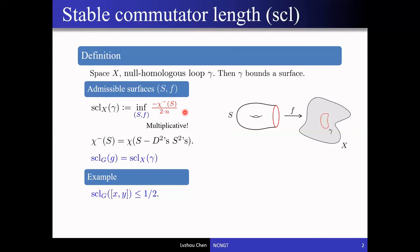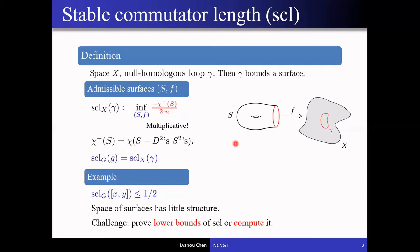It is very easy to get an upper bound by just exhibiting one admissible surface. On the other hand, proving a lower bound or even computing the stable commutator length is usually a challenge, because the space of surfaces has very little structure and it is very hard to take the infimum in general.